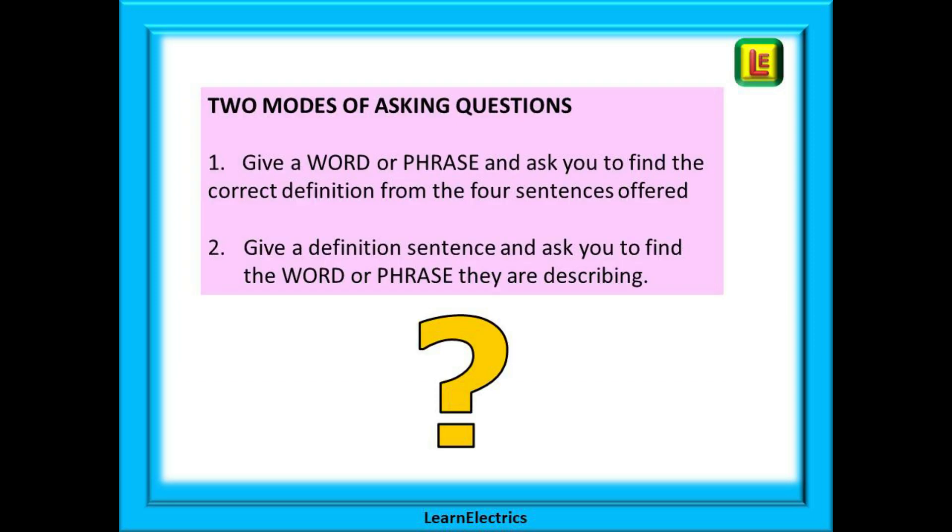The exam setters will use two modes of asking questions. The first style of question will give you a keyword or phrase and ask you to find the correct definition from the four sentences offered A, B, C, or D, and the alternative type of question is to give you a definition sentence and to ask you to find the word or phrase that they are describing and we will show you this now.